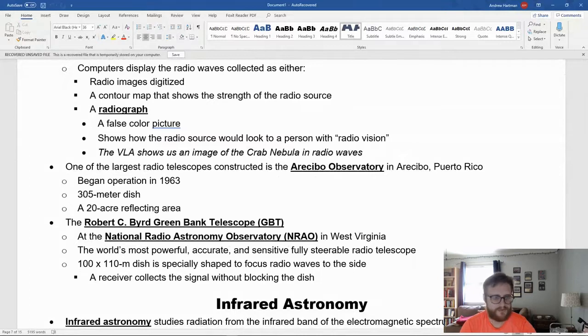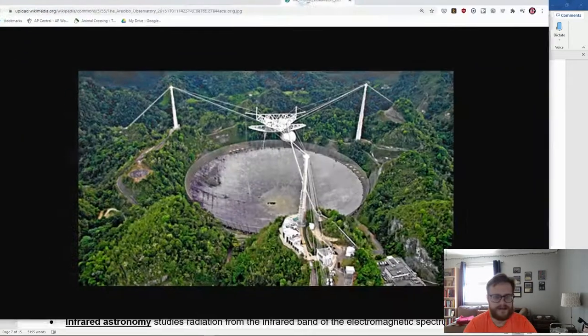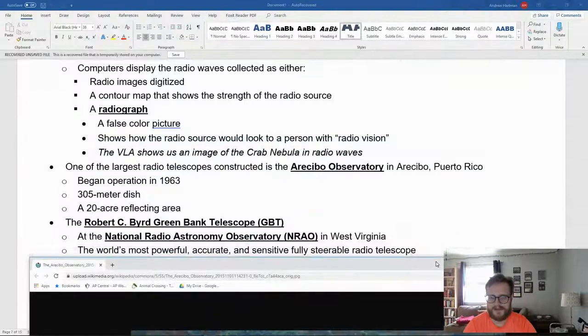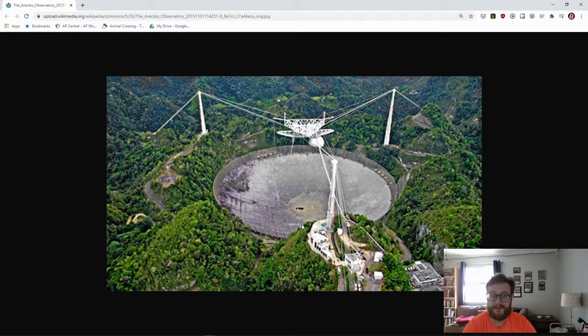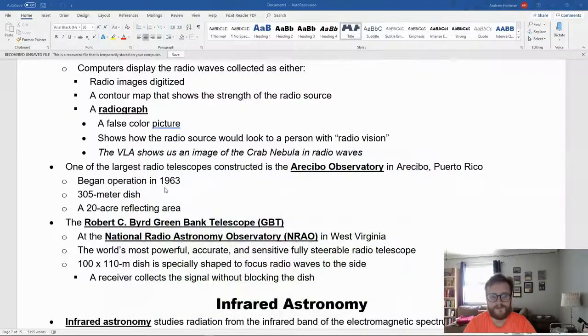One of the largest radio telescopes constructed is the Arecibo Observatory in Puerto Rico. If you ever see the movie GoldenEye, the James Bond movie ends here with a whole fight scene. The Arecibo Observatory began operating in 1963 with a 305-meter dish, which means it has a 20-acre reflecting area.